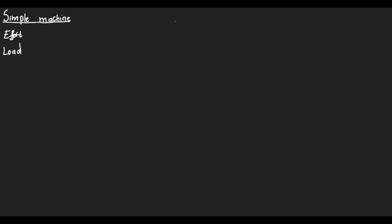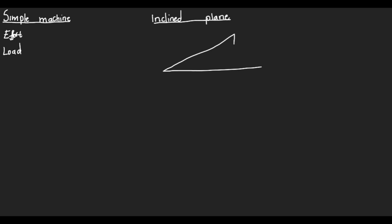Now, there are about six types of simple machines. From those six types we are just going to look at the inclined plane. The best example of an inclined plane is a mountain pass, where we have this illustration of a sloping or slanting surface.